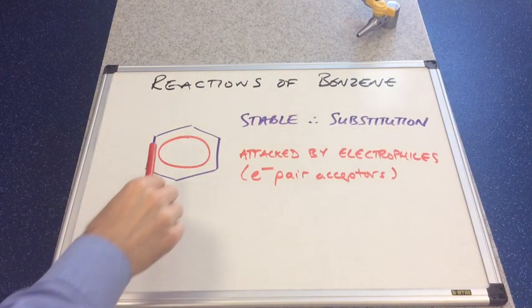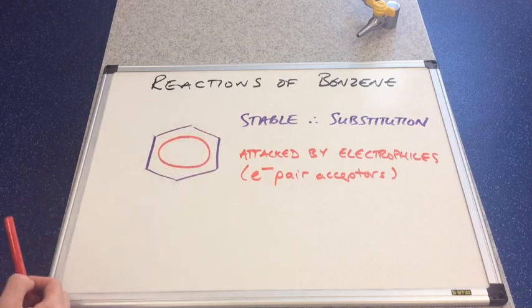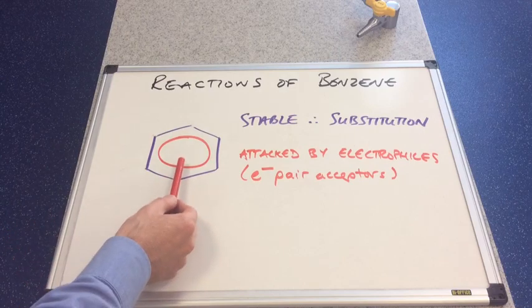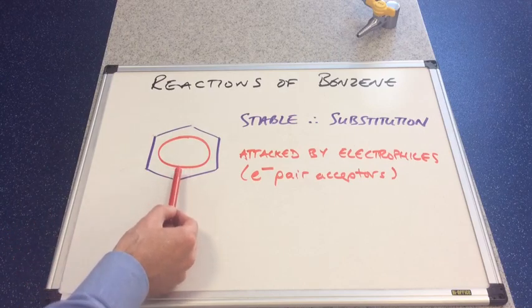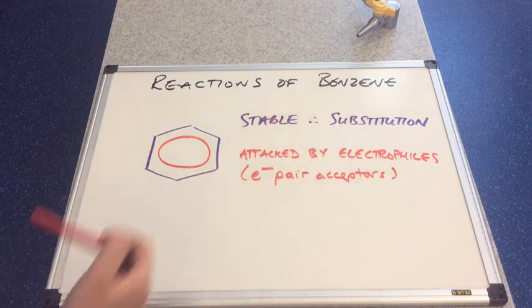Because of the pi electron cloud it's going to be attacked by species that can accept a pair of electrons from this pi electron cloud and so it is attacked by electrophiles.